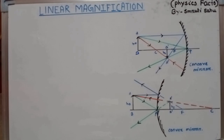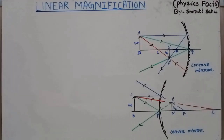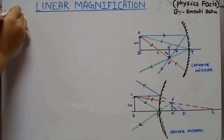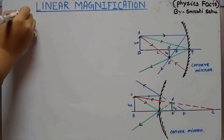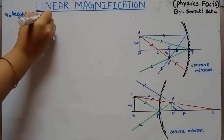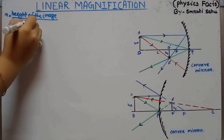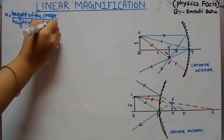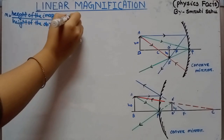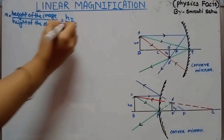Linear magnification is nothing but the ratio of height of the image to the height of the object. That means we compare the height of the image to the height of the object. Magnification is represented by small m, which equals the ratio of height of the image (HI) to the height of the object (HO).